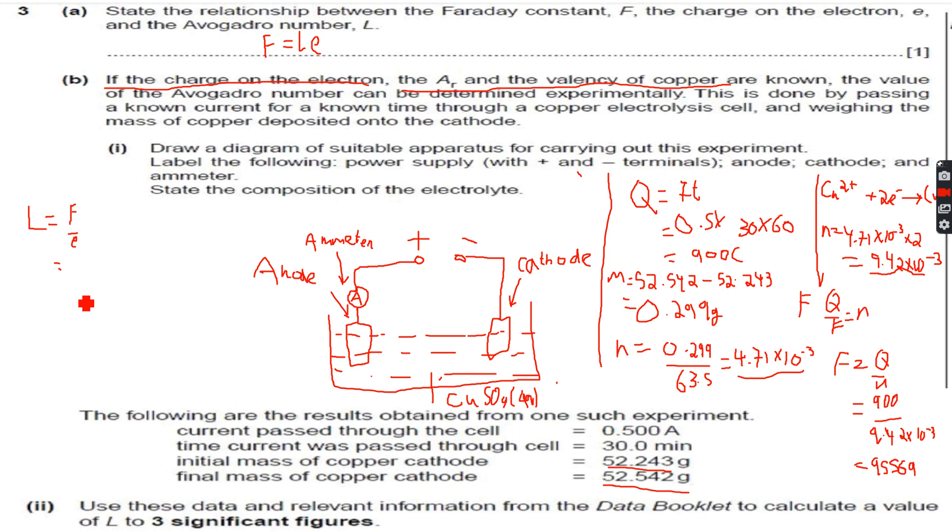This equals 95569 over electronic charge, which is 1.6 into 10 to the power of minus 19. Let me do this on my calculator.